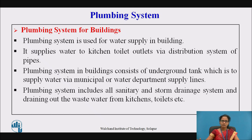The plumbing system includes all the sanitary and storm drainage systems, draining out waste water from kitchens, toilets, etc. The plumbing system in general serves two main purposes: one is to supply water for human use, and the second is to remove waste water of various types — whether waste water or soil waste — by pumping.